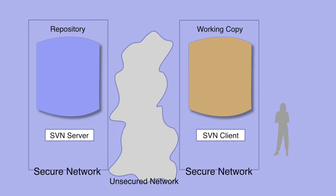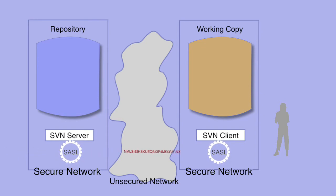If you can't use a VPN, or you have some users who cannot use a VPN, subversion offers other methods of encrypting the username and password exchange. In order for client and server to securely exchange username and password over an insecure network, they'll both need to speak the same language — both need to be capable of using the same encryption. Prior to version 1.5 of subversion, you were limited to using either Apache or SSH to secure this exchange. As of version 1.5, many clients and servers can use the Cyrus SASL library — SASL is short for Simple Authentication and Security Layer, and Cyrus SASL is just one implementation of the SASL standard. This provides the ability to use a variety of secure methods to exchange the username and password.